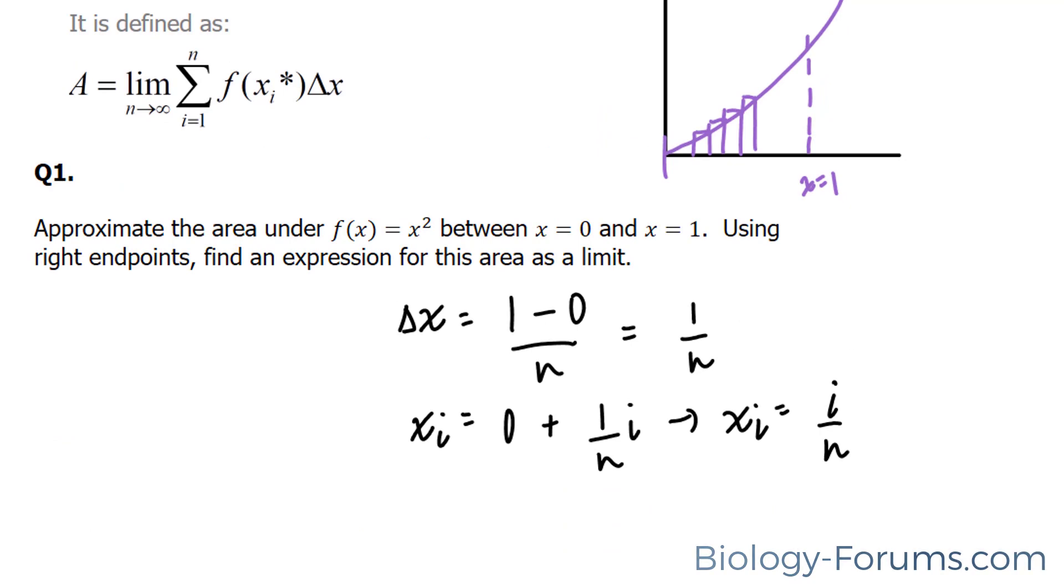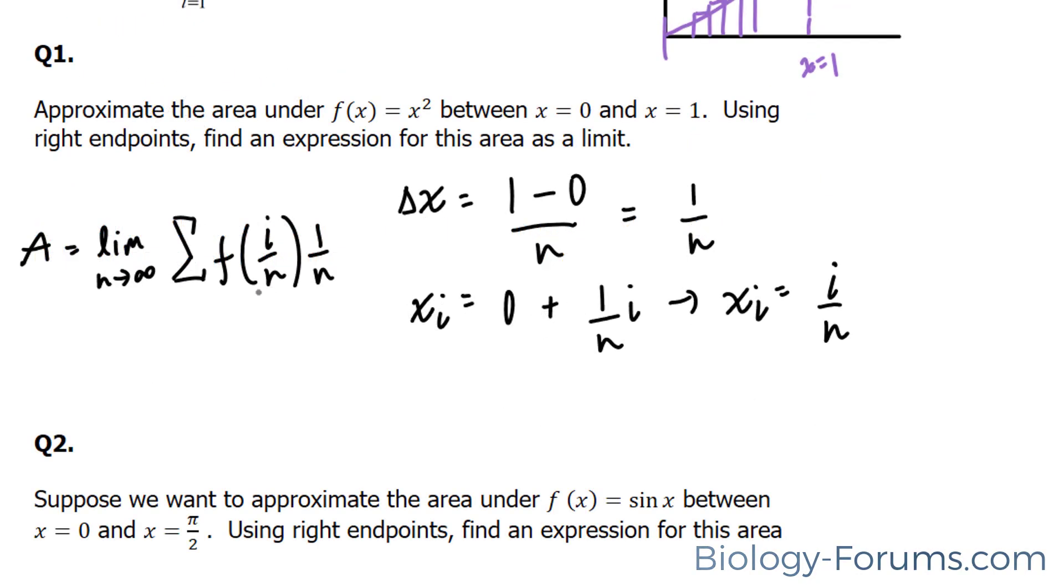So next, we're going to apply everything that we know into this definition so that we can find the expression. The area as the limit n approaches infinity is f at this i over n times 1 over n. Now the function that we're focusing on is x to the power of 2. So we're going to replace this with x to the power of 2.